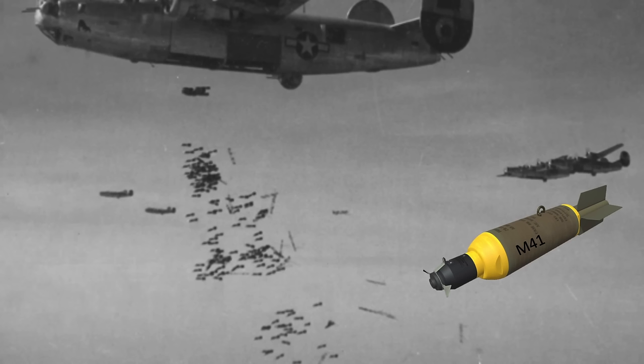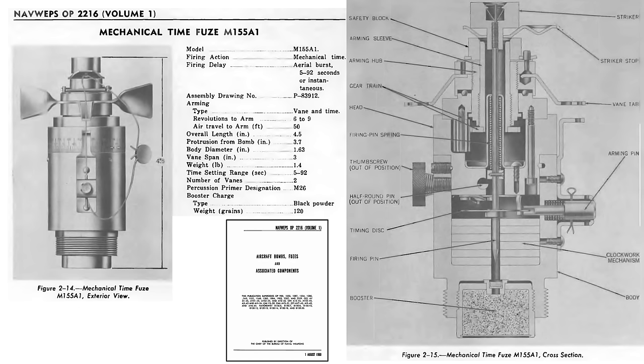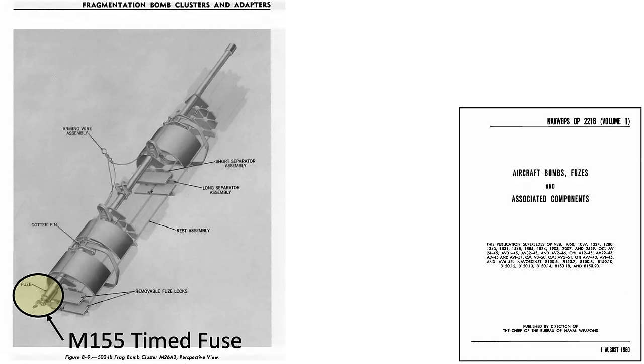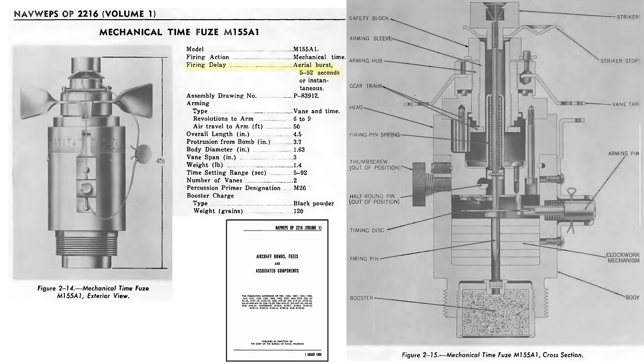This B-24 is releasing M41 fragmentation bombs. This page lists characteristics and components of the M155 timed fuse. The M155 fuse releases the M41 fragmentation bombs from the cluster. Firing delay can be set from 5 to 92 seconds after cluster release from the plane. This action will release the 20 M41s from the cluster at 6 to 9 vane revolutions to arm the fuse.